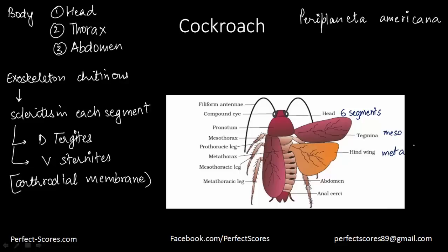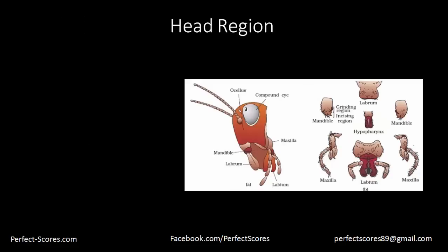The mouth parts of the cockroach include compound eyes, the jaws — the mandible and the maxilla — the labrum (upper lip), and the labium (lower lip). There is also an ocellus and a tongue-like structure called the hypopharynx, which is a flexible lobe within the cavity enclosed by the mouth parts. The mandible and the maxilla are basically the jaws.